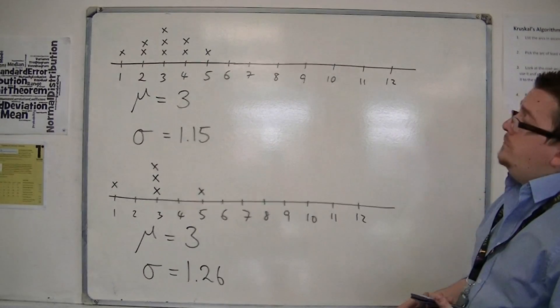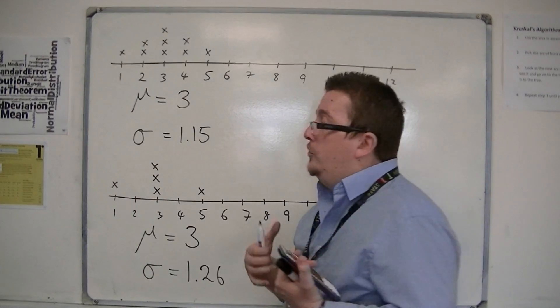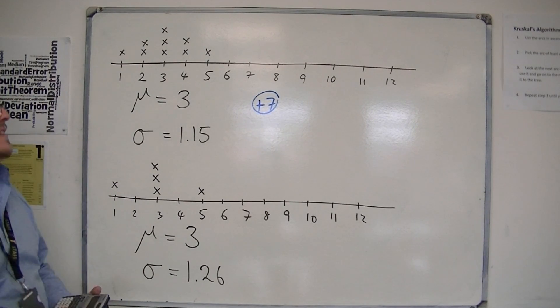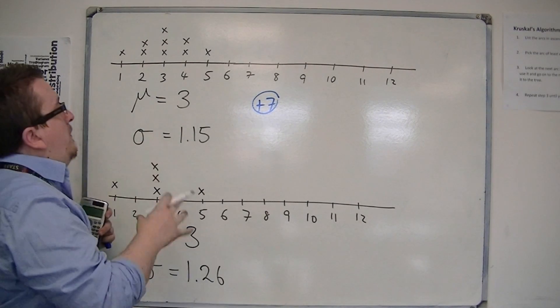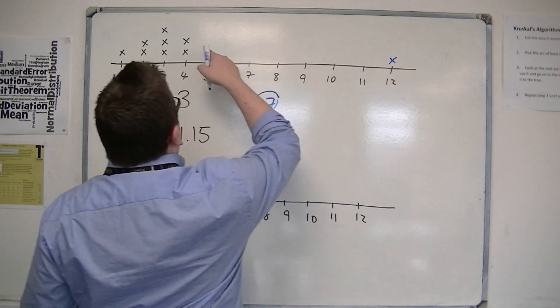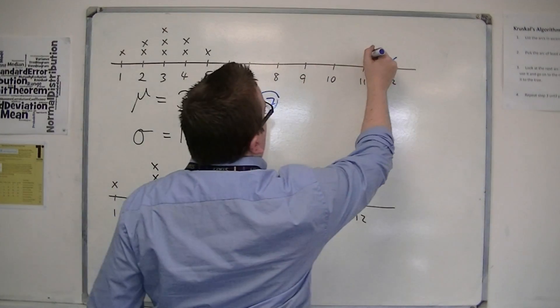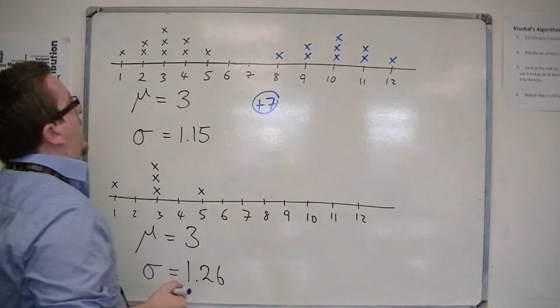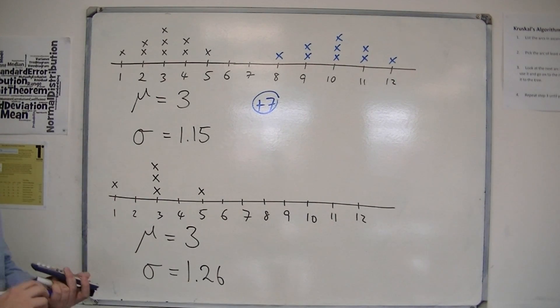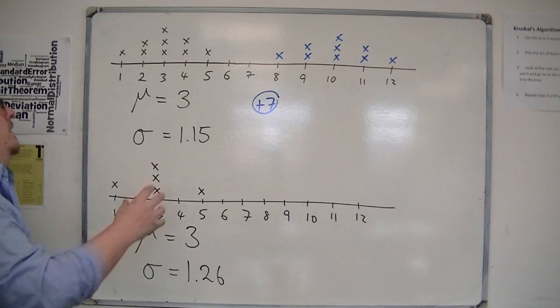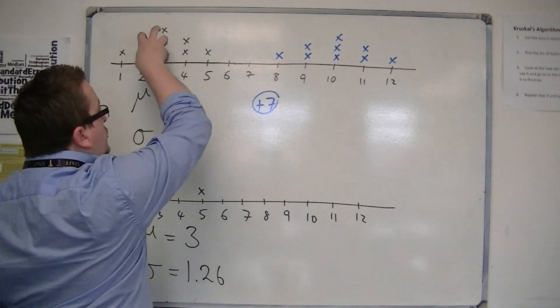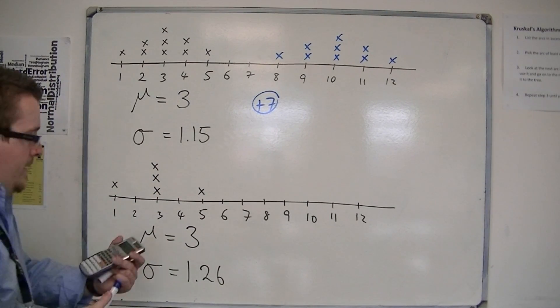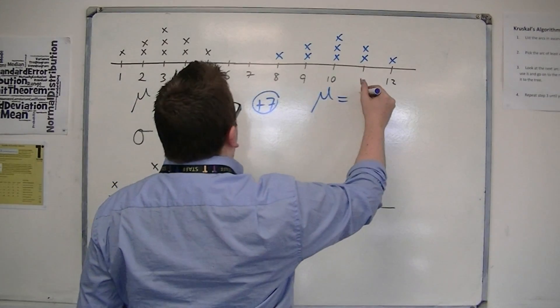Now let's say I add seven to each of these original bits of data. I add seven to each. Let's have a look at what happens. So five will become twelve, the two fours will become elevens, and I'll have three tens, I'll have two nines, and one eight. So just by looking at it, you can see that the mean, as it's been transferred, will also have increased by seven. So the new mean here would be ten.